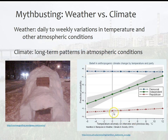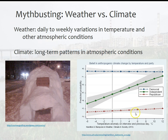This data is from 2013, so my guess is the Republican line would probably shift up a little bit today. Democrats, whether it was colder or warmer than usual, scored very high — they believed humans impacted the climate. What's particularly fascinating is the independent line: when it was colder than it should be, independents were pretty low in their belief. But as it got warmer than expected that day, belief in climate change increased significantly — almost doubling from about 0.35 to 0.7.